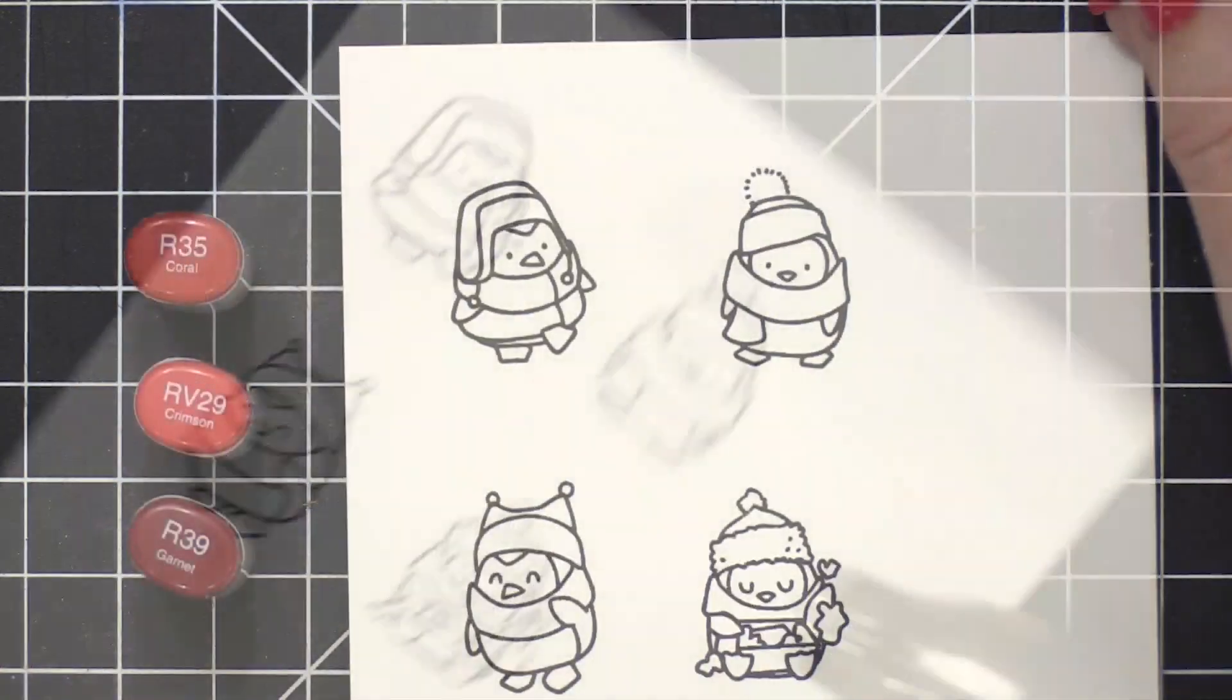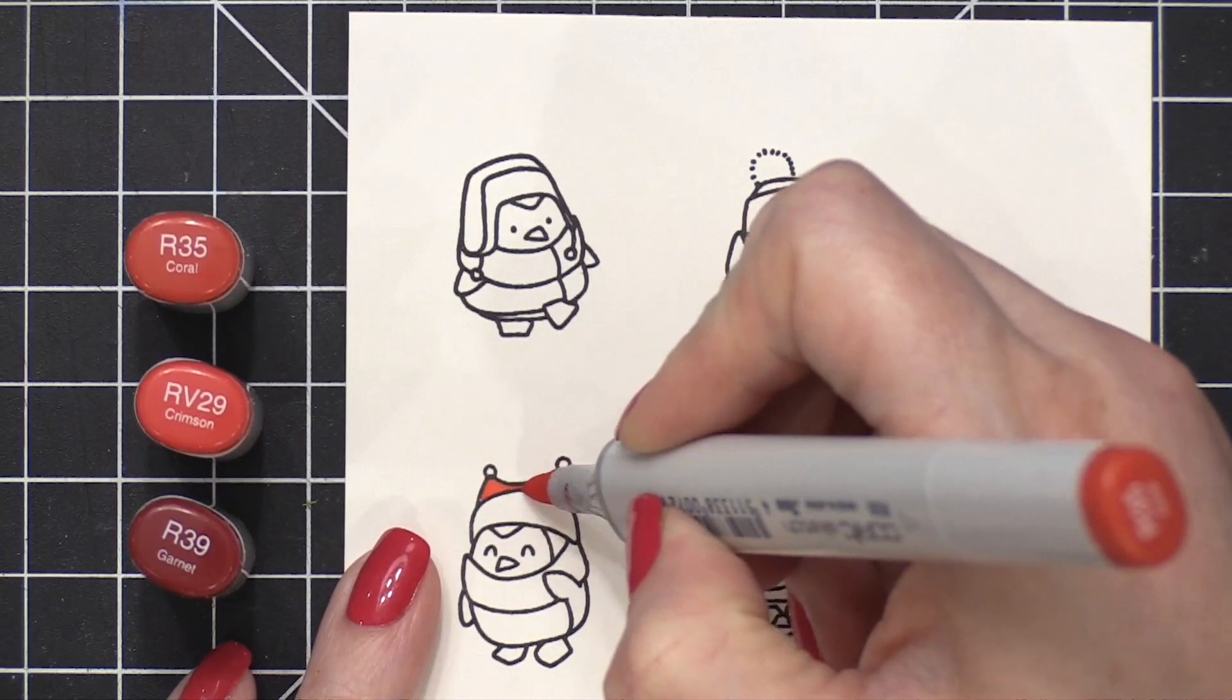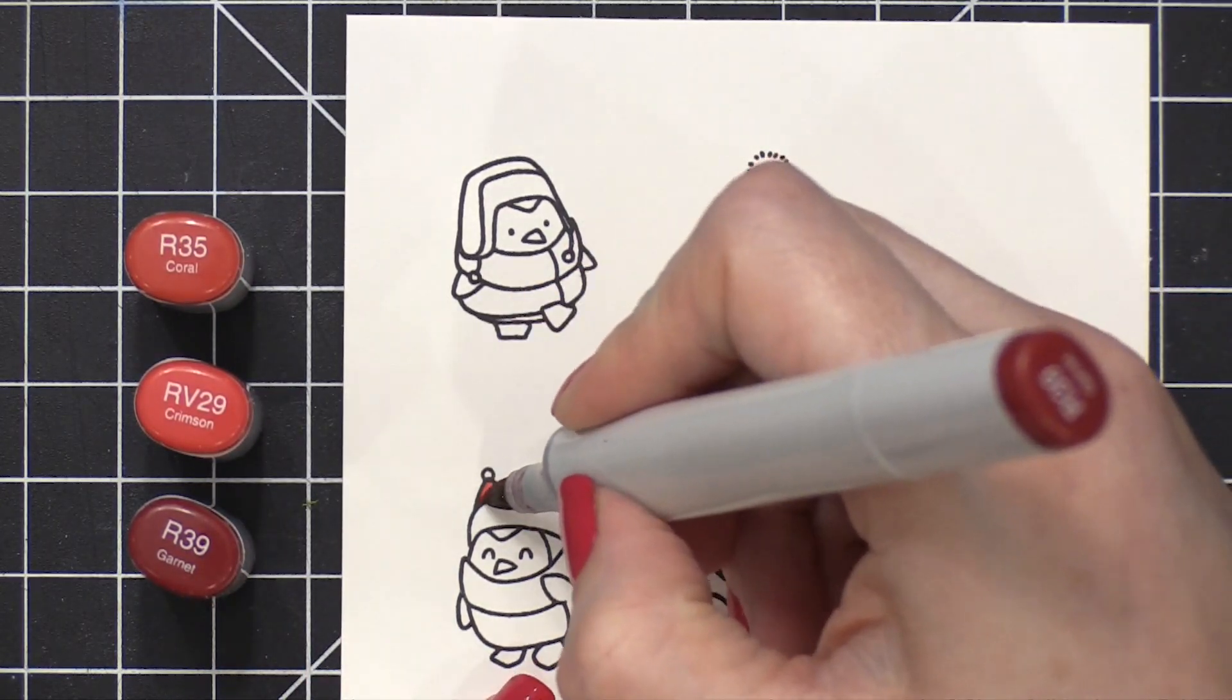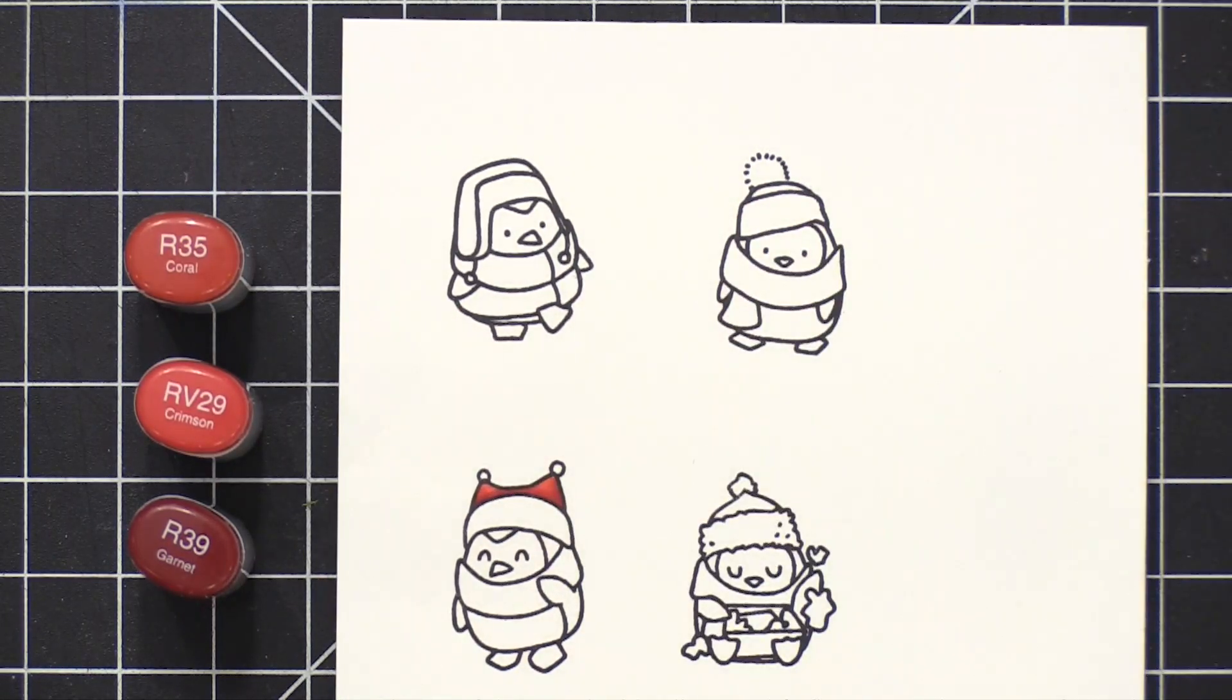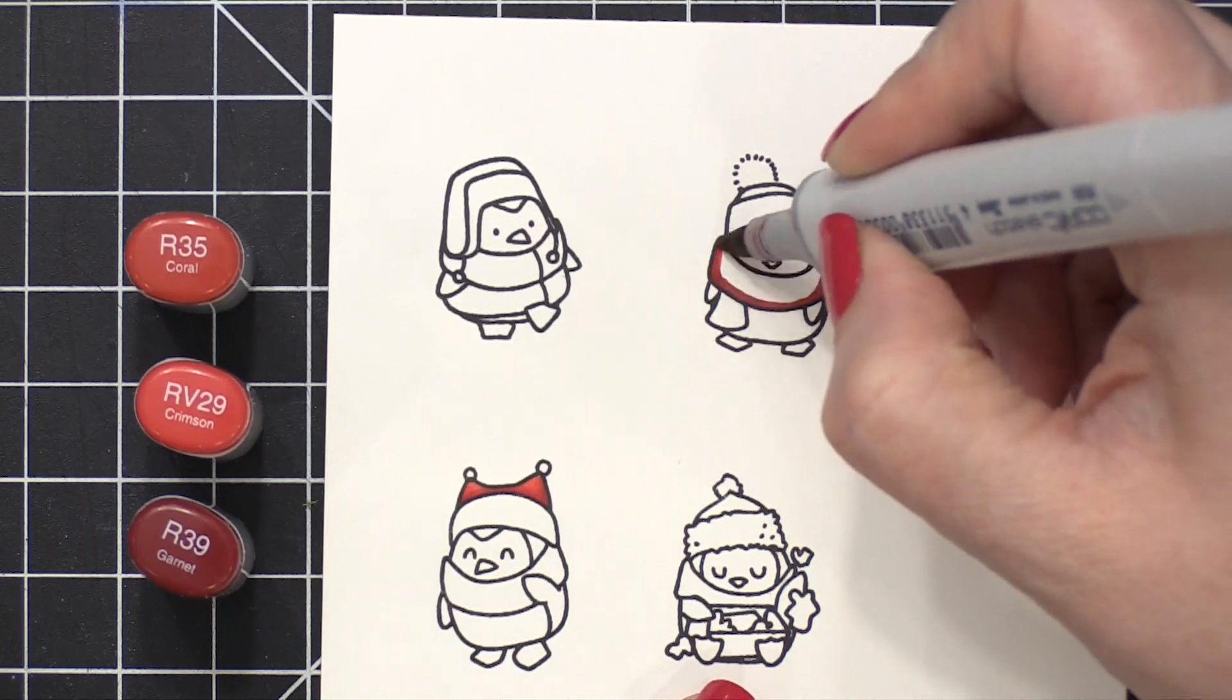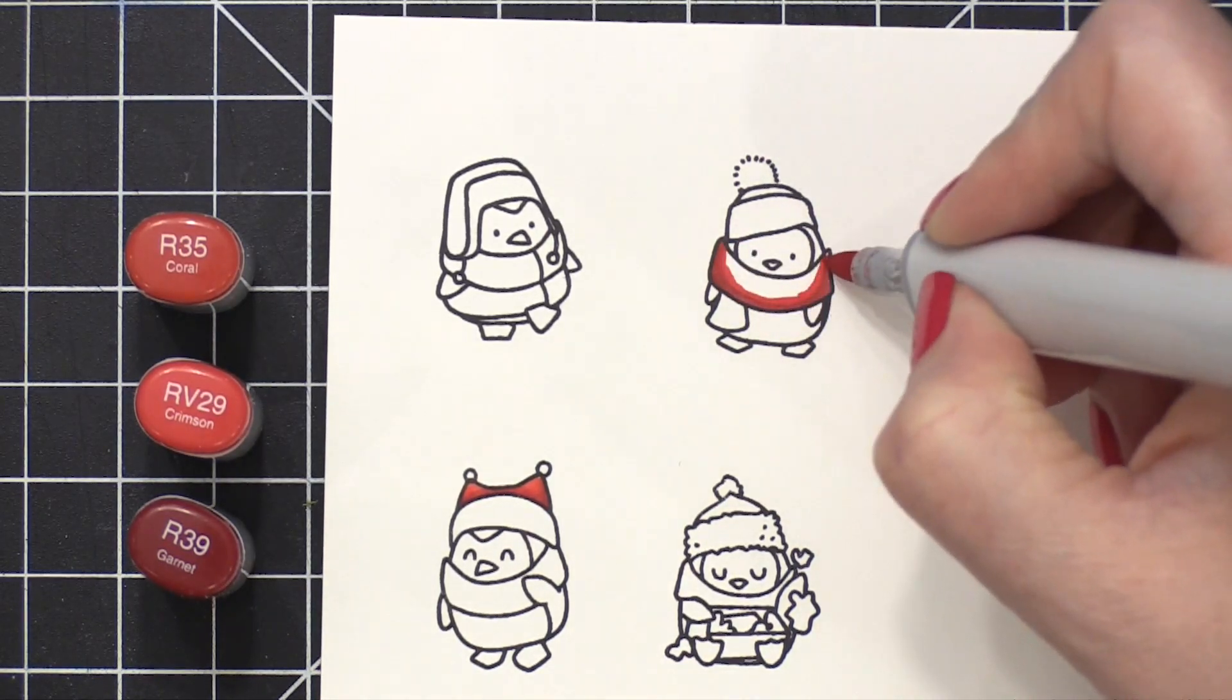Now I mentioned before that I stamped these images twice. So I just hit that with my heat tool just for a few seconds to make sure everything was dry. That's just going to prevent any ink from smearing. Once this ink is completely dry, it is very Copic friendly and you won't have any smearing or smudging into your images.